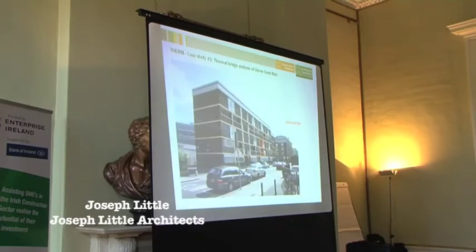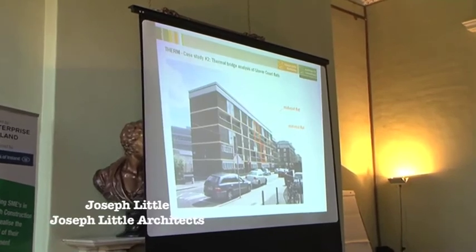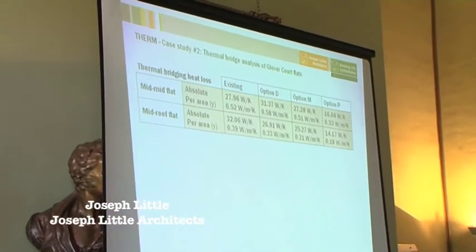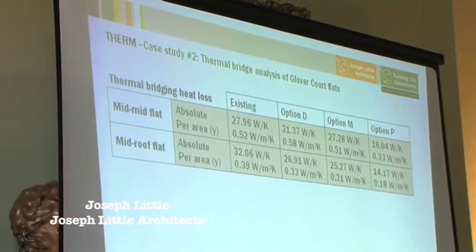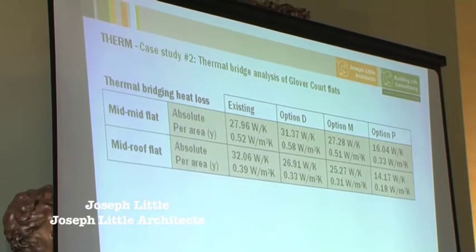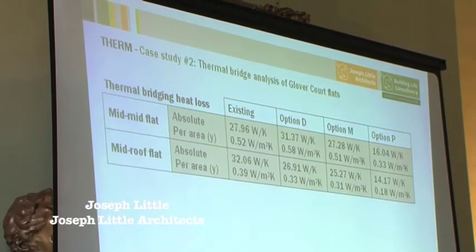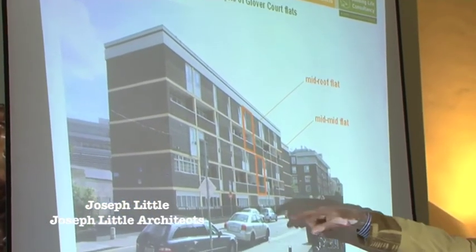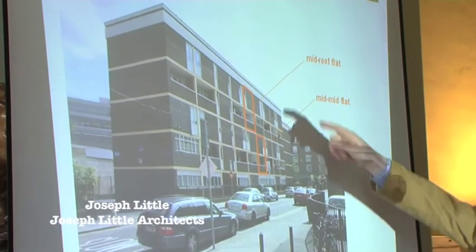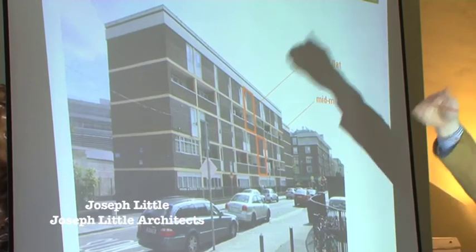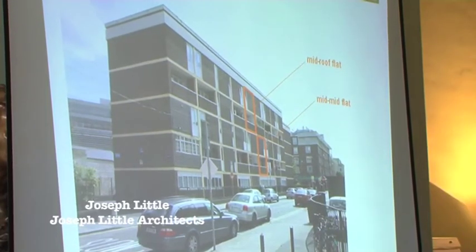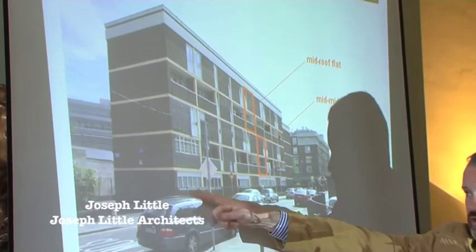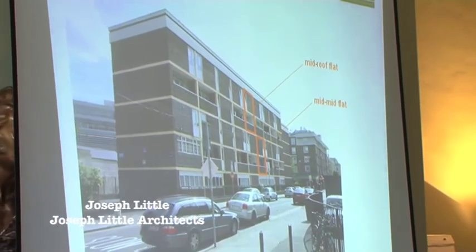Option P also meant that the thermal envelope line was now continuous through the building rather than stepping in and out at every balcony. We were still faced with compromises on the courtyard side because of fire exit width requirements. They had a budget of two or three million but there were things they were up against. Looking at the mid-mid flat and mid-roof flat — all duplex — and looking at the thermal bridging in those units. We did about 150 thermal bridge calculations across a range, zooming in on particular units representative of the best condition and something more typical with a bigger thermal envelope.